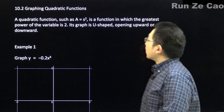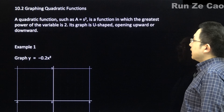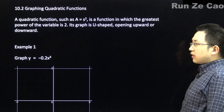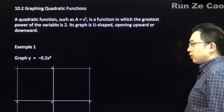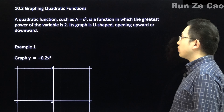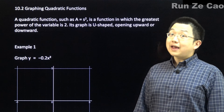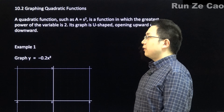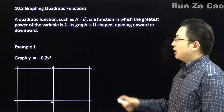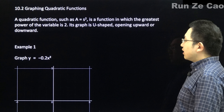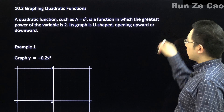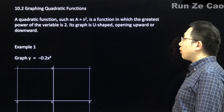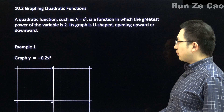Graphing quadratic functions. A quadratic function, such as y = x², is a function where the greatest power of the variable is 2. The graph is U-shaped — it's called a parabola. It opens upward or downward. Let's do some examples: graph y = -0.2x².